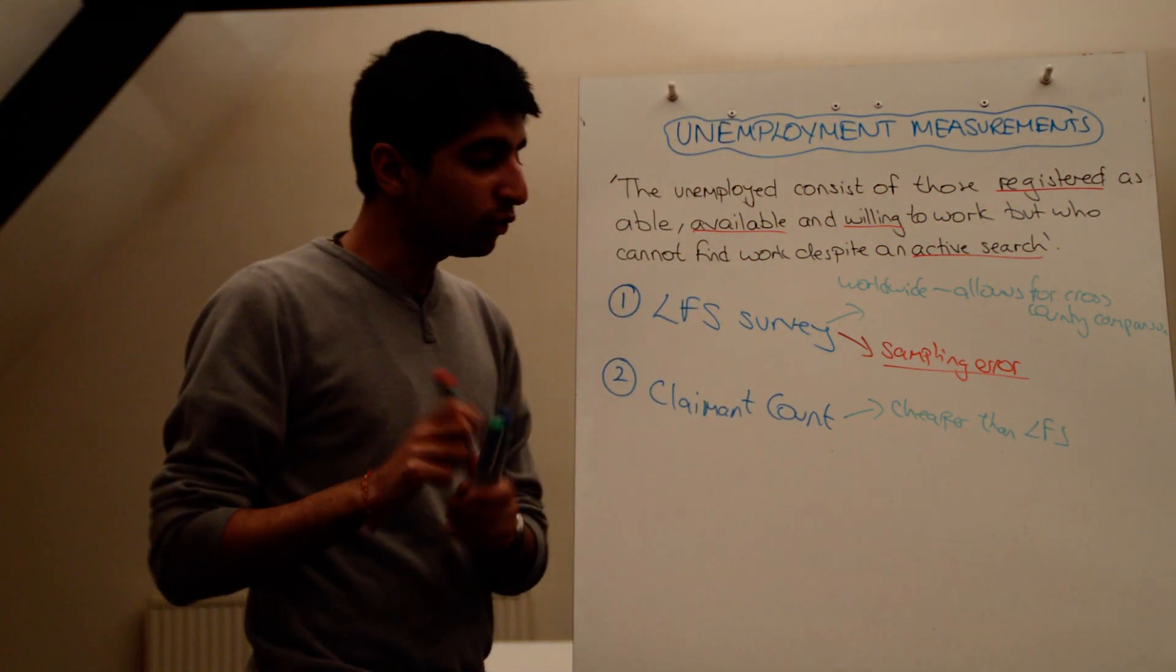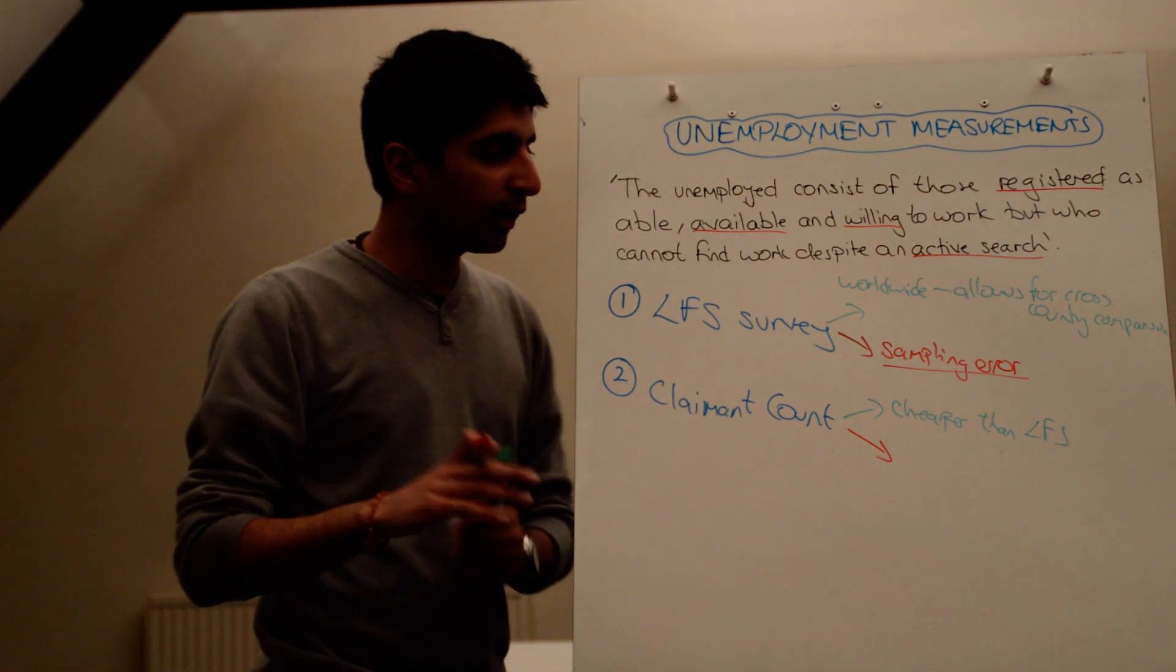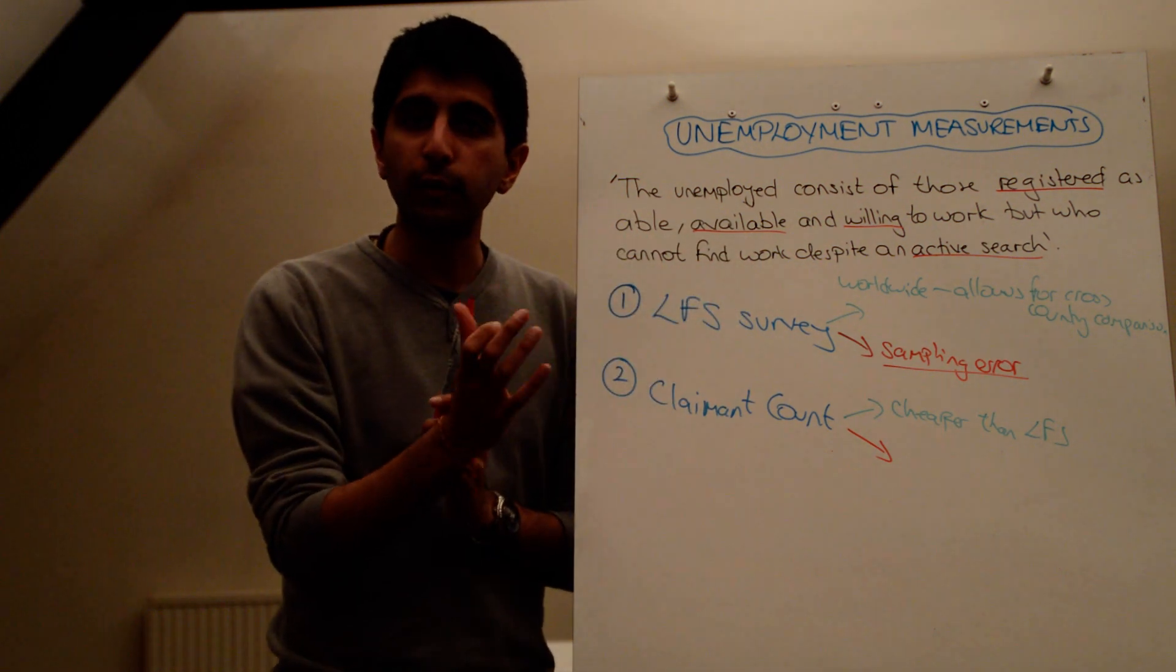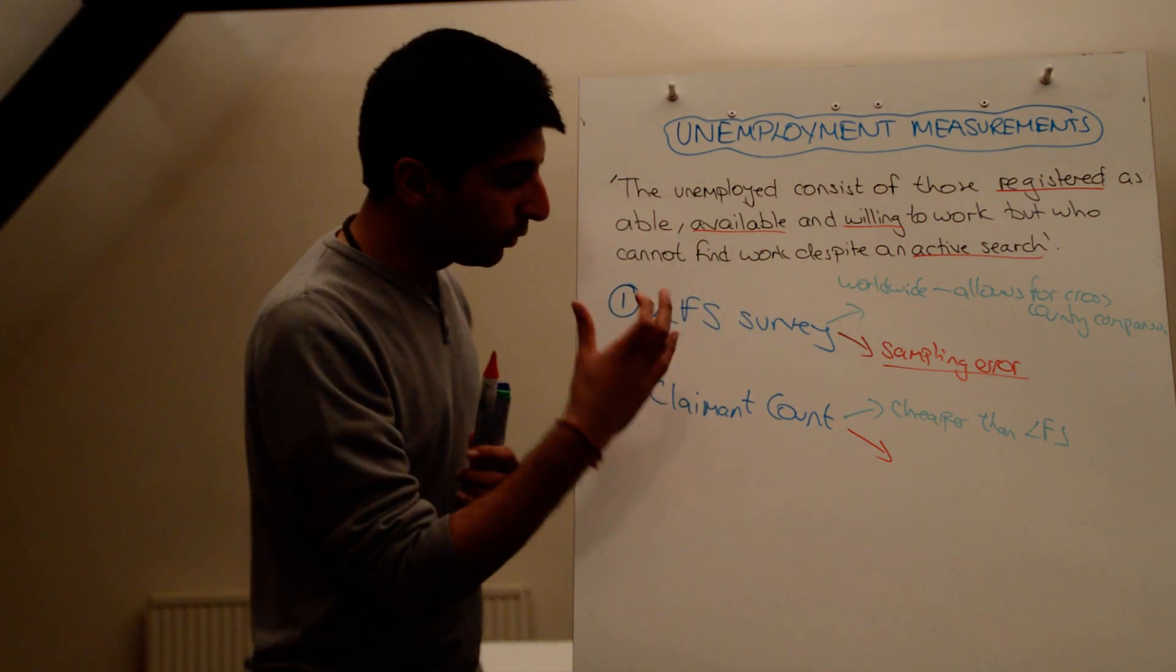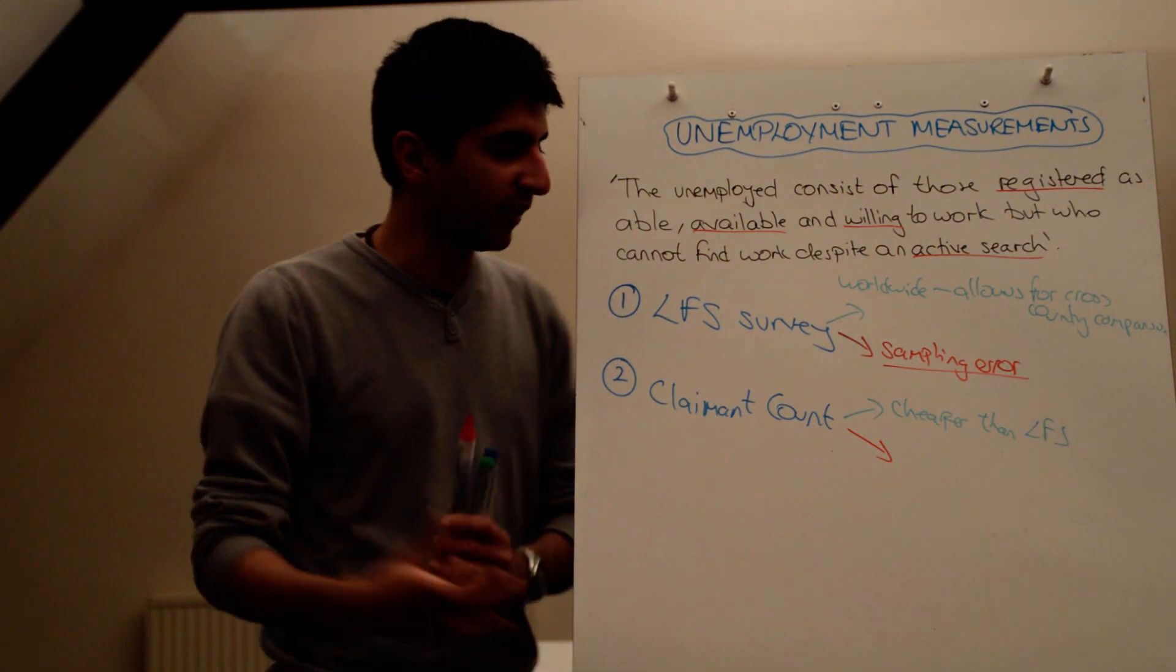But one of the main issues with the claimant count measure is that it doesn't actually include all people that would be unemployed given the ILO definition of unemployment. To claim the claimant count, there are all sorts of other stringent rules and regulations you have to fit. For example,